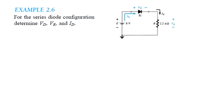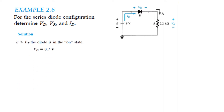Now let us look at Example 2.6. This circuit has an 8V supply voltage, a silicon diode, and a 2.2 kilohm resistance. We need to find VD (voltage across diode), VR (voltage across resistance), and ID (current through the circuit). We verify that E is greater than VT: 8V is greater than 0.7V, therefore the diode is in the ON state. So VD equals 0.7V.